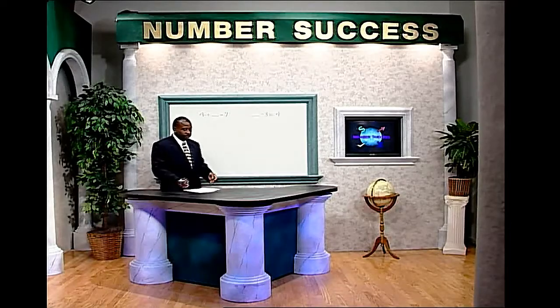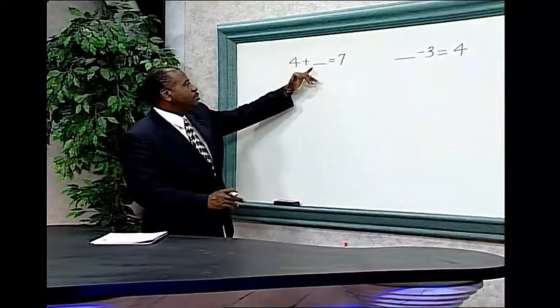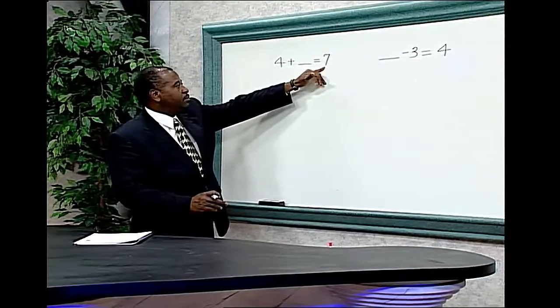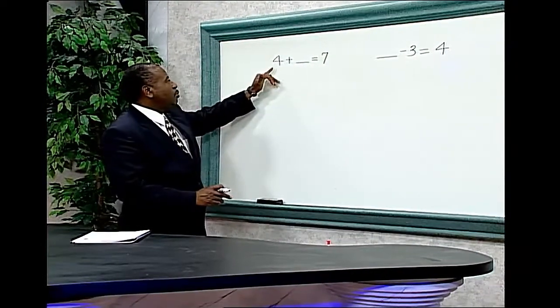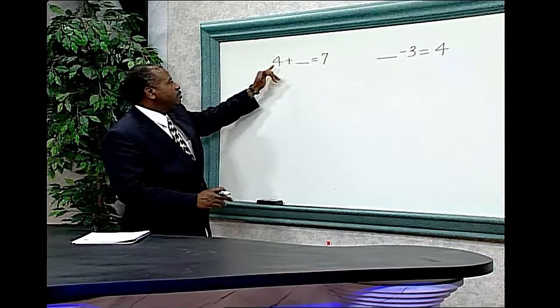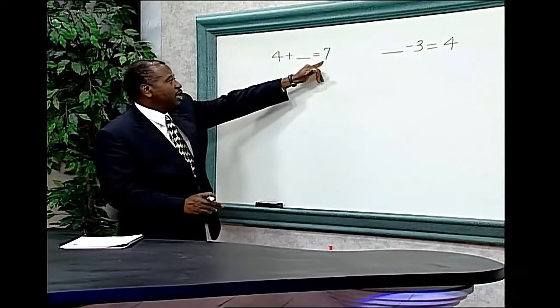Find the missing number. 4 plus blank equals 7. In this particular problem, we want to find what number when added to 4 equals 7.